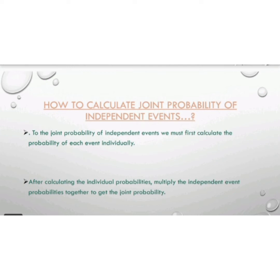To calculate the joint probability of independent events, we must first calculate the probability of each event individually. After calculating the individual probabilities, multiply the independent event probabilities together to get the joint probability. These are the two procedures to calculate the joint probability of independent events.